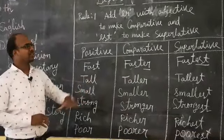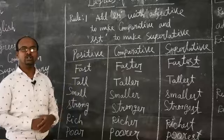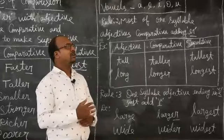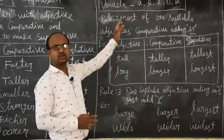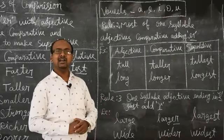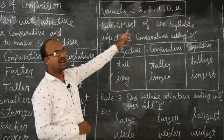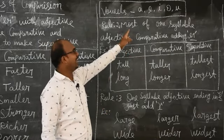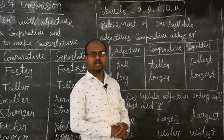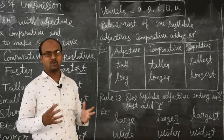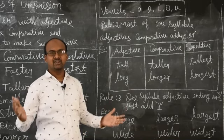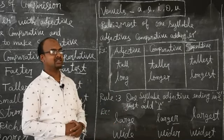So we have to add ER for comparative and EST for superlative along with the adjective. The first rule is over. Now, before we go to the second rule, we have to know the vowels. Five letters are vowels: A, E, I, O, U. These are the five vowel letters. Remaining letters are all consonants. In the alphabet, we have 26 letters; five are vowels, and remaining 21 are consonants.